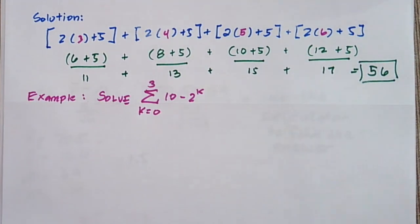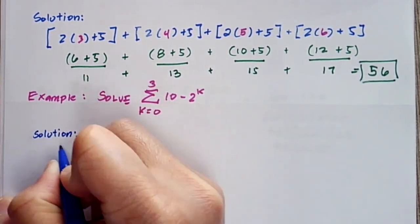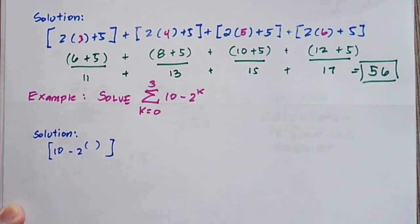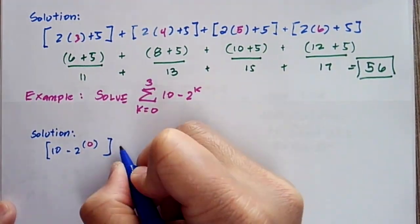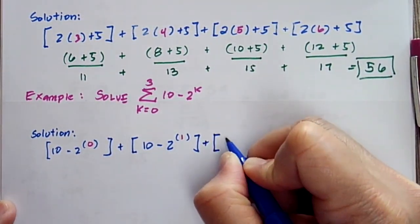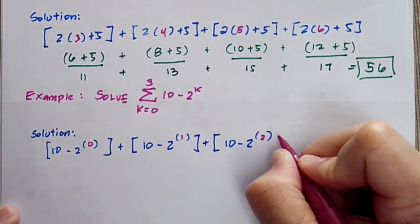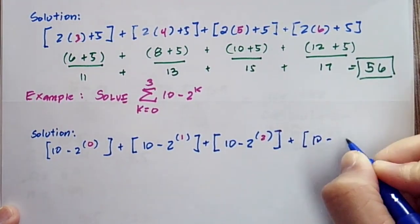Similarly, we have the summation of 10 minus 2 raised to k from 0 up until 3. We're going to evaluate this formula by substituting k with 0, 1, 2, and 3.